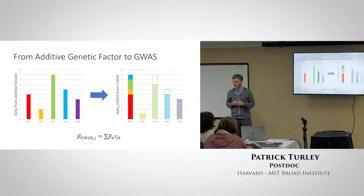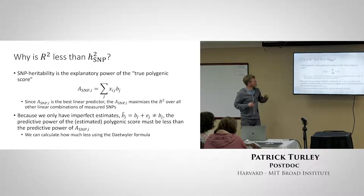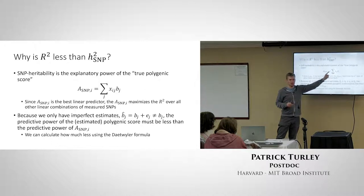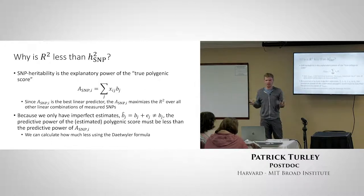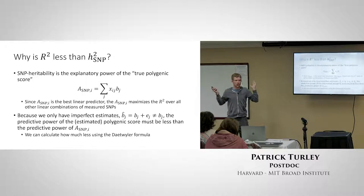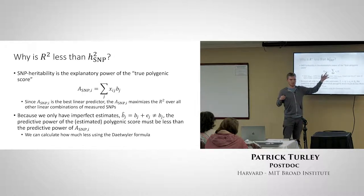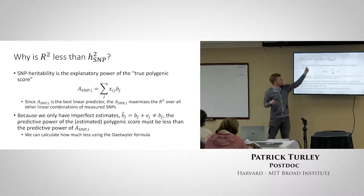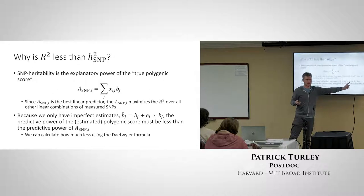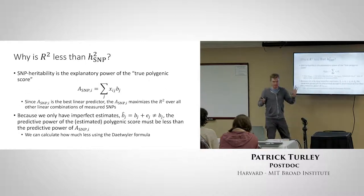Why is R² less than h²_snp? When we defined h²_snp, we said it was the best linear predictor of the phenotype — the weighted sum of genotypes that maximizes R² between the weighted sum and the phenotype. We don't know the true Bs, so we estimate them. The estimated B-hats equal the true Bs plus some error — and since the true Bs are what maximize R², using B-hats instead gives us an R² that's less.